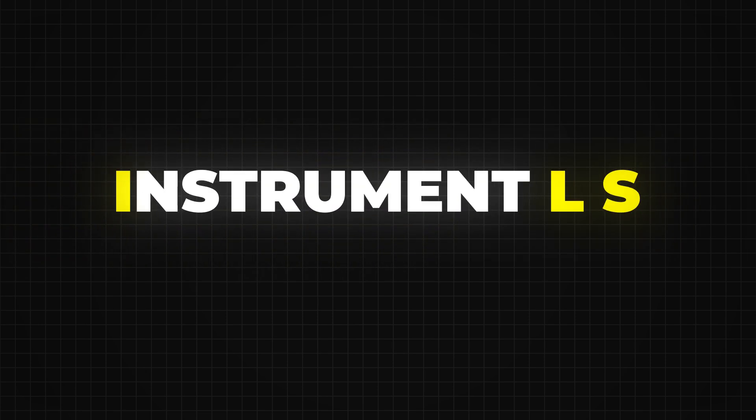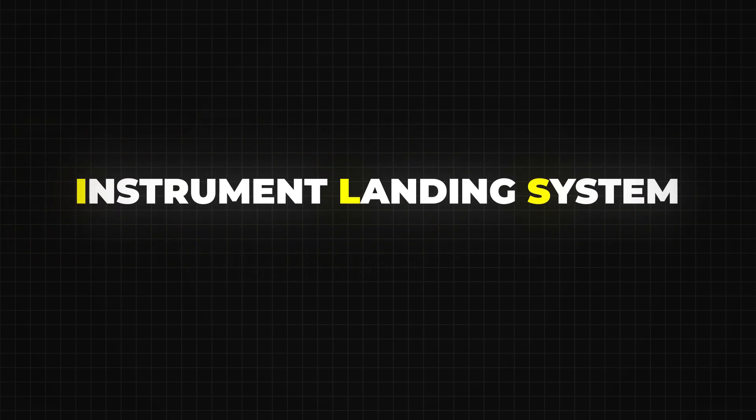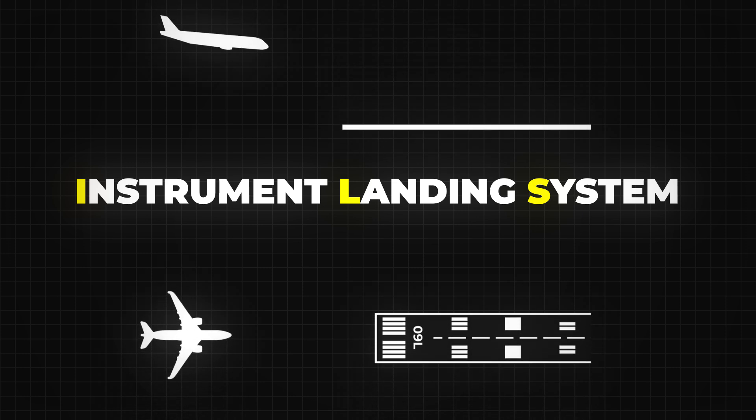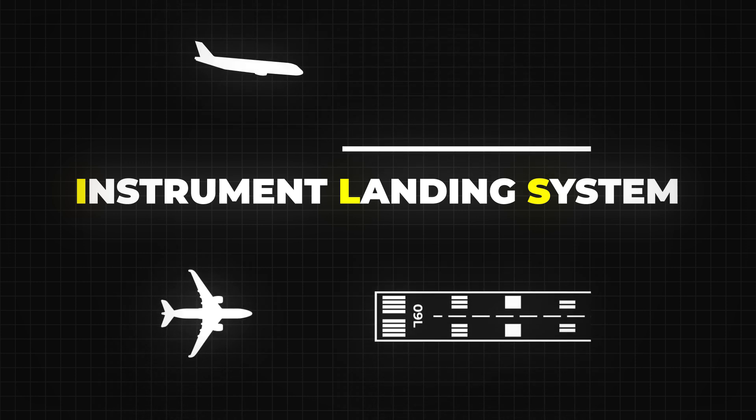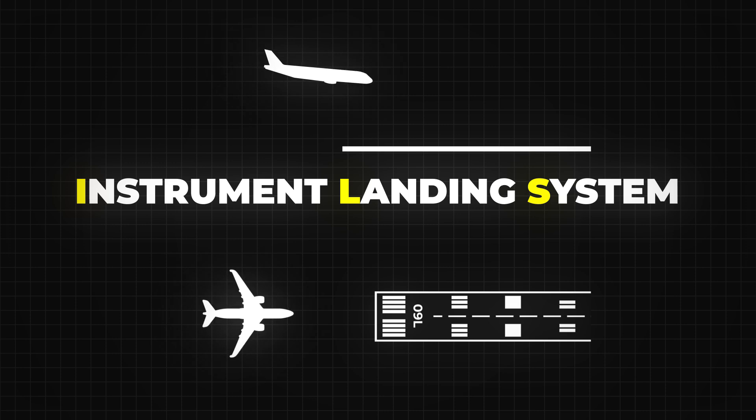ILS stands for Instrument Landing System. It's a ground-based navigation system that helps pilots align with the runway both horizontally and vertically, especially when they're flying in bad weather or low visibility conditions.